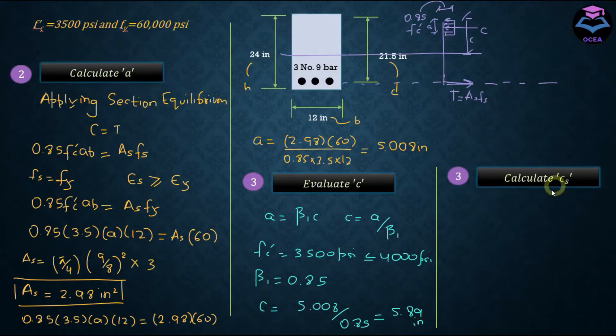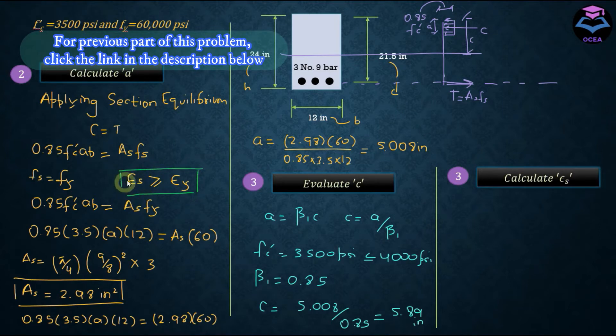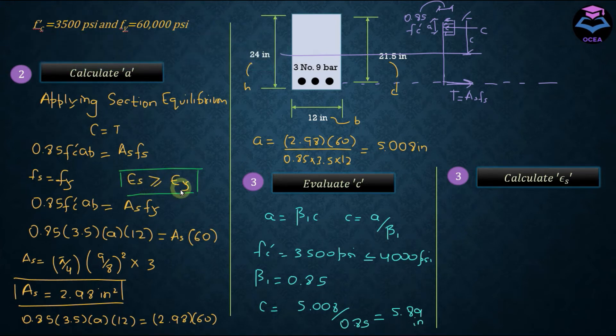And now we will calculate the value of epsilon s, that is the stress in the steel, to check our assumption that we had taken in the second step, whether or not the strain in steel is greater than or equal to the yield strain of steel.